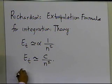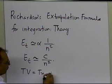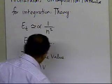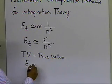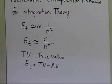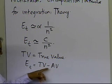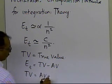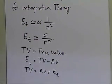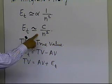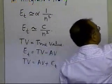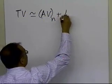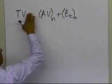We already know that the true error is defined as true value minus approximate value. That implies that the true value equals the approximate value plus the true error. So the true value of the integral is approximately equal to the approximate value obtained by using n segments, plus the true error associated with those n segments.